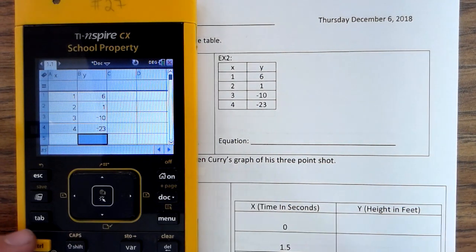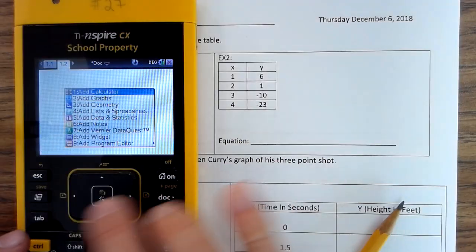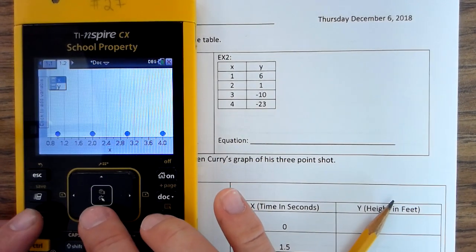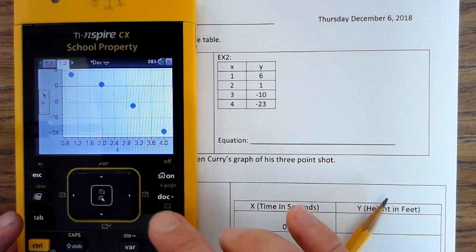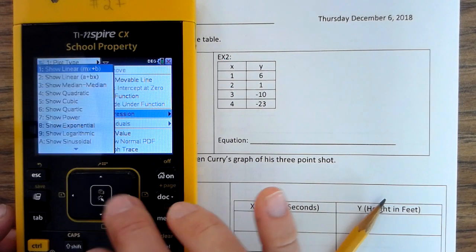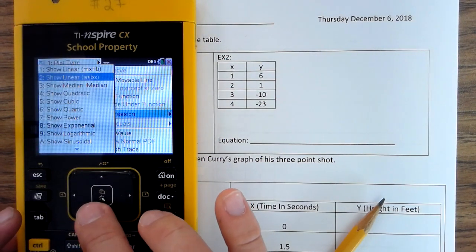Control, Doc, number 5, tab X, tab Y. Menu, Analyze, Regression, Show Quadratic.